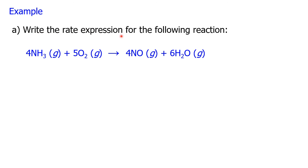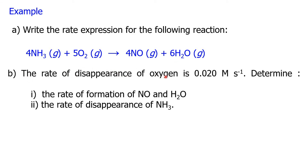Let's have a look at an example to see how we can utilize the differential rate equation. Write the rate expression for the following reaction: 4NH₃(g) + 5O₂(g) → 4NO(g) + 6H₂O(g). The second part of the question states that the rate of disappearance of oxygen is 0.02 molar per second. Determine the rate of formation of NO and H₂O, and determine the rate of disappearance of NH₃.